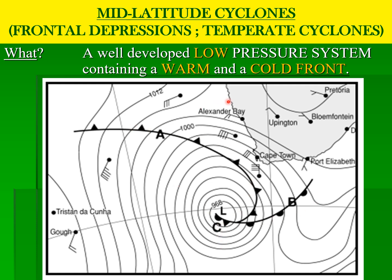In order to identify it on a synoptic weather map, look for a low pressure at the center of the weather system. Attached to this low pressure, you are going to find both a cold front and a warm front. These fronts occur because they are separating air masses that have different temperatures. The system has a well-developed low pressure at its center to which both a cold front and a warm front are attached.